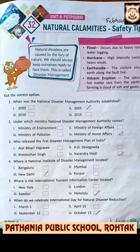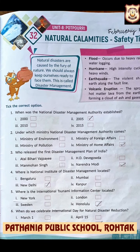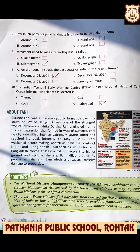Where is the International Tsunami Information Center located? It is located in Honolulu. When do we celebrate International Day for Natural Disaster Reduction? October 13. How much percentage of landmass is prone to earthquake in India? 58% of the landmass of India is prone to earthquake.